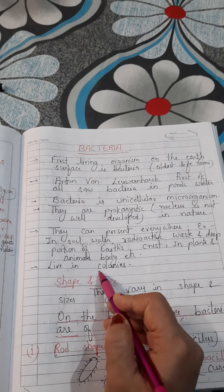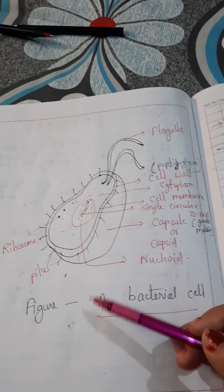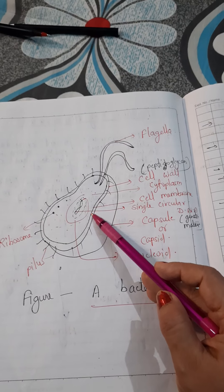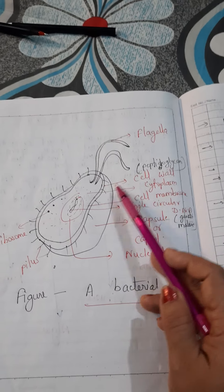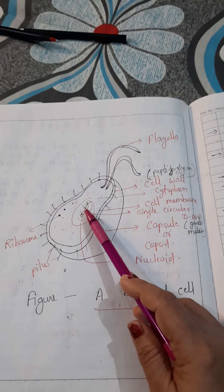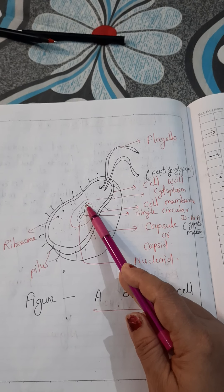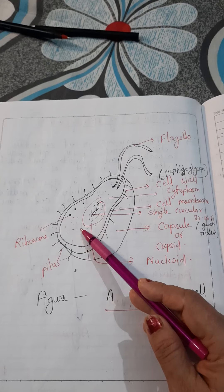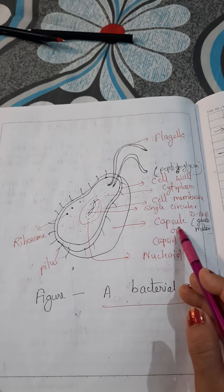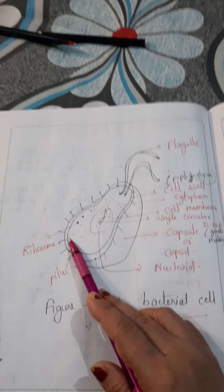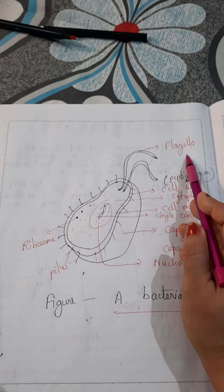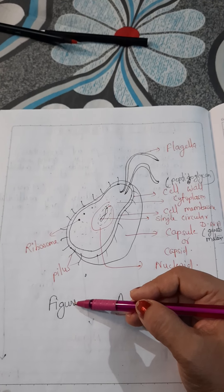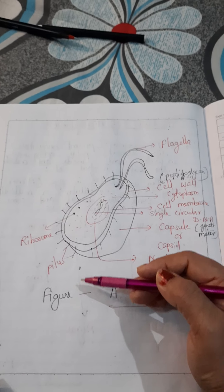Bacteria live in colonies, meaning they live in groups. Looking at the diagram of a typical bacterial cell: the outermost covering is called the capsule or capsid. Inside that are two layers — the outer one is the cell wall, made up of peptidoglycan, and the inner one is the cell membrane. Inside is the cytoplasm, and within the cytoplasm, the nucleoid is present. The nucleoid is the nuclear matter — the nucleoplasm not surrounded by a nuclear membrane — and inside it, circular DNA is present, which is the genetic material of bacteria. Ribosomes are also present. There are flagella (a single one is called a flagellum) which help in movement, and hair-like structures called pili (the larger ones called fimbriae) which help in the conjugation process — that is, attaching one bacterium to another.